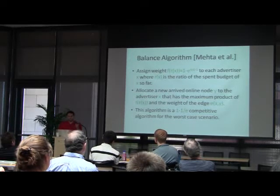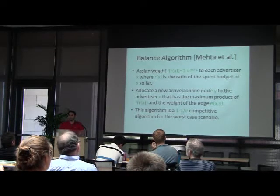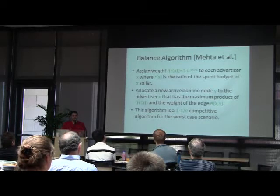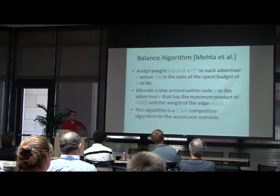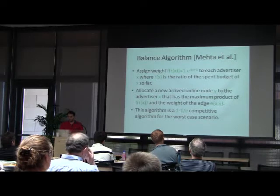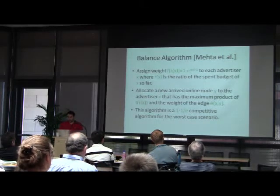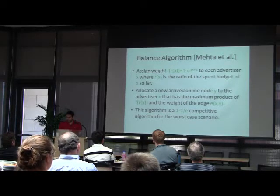Let me first go over the balance algorithm. In this algorithm, they assign weights to advertisers or bins, which is basically a function of the ratio of their spent budget. They have a scoring function f which gets the ratio of the budget of the bin that has been spent so far and assigns a weight to the bin. When a new online node arrives, they find the bin that maximizes the product of the bin's weight and the weight of the edge between that bin and the new arrival. This greedy approach gives a one-minus-one-over-e competitive algorithm for worst-case scenarios. The question is: does it do anything better when the input is a random arrival?